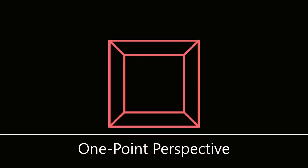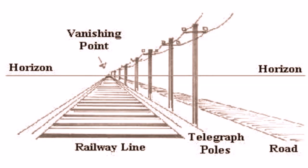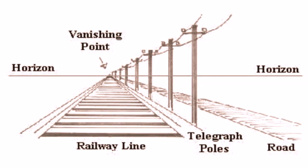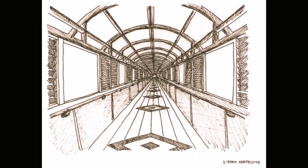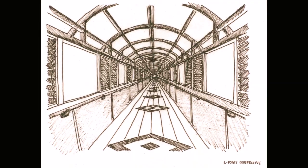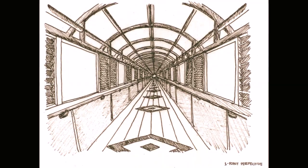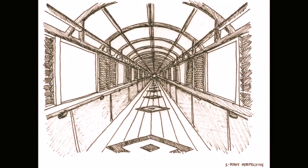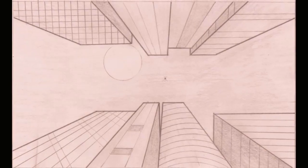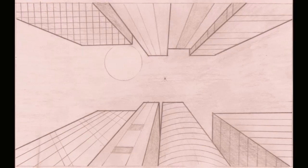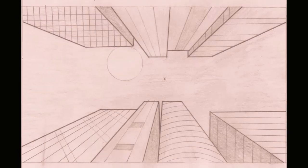One-point perspective. A drawing has one-point perspective when it contains only one vanishing point on the horizon line. This type of perspective is typically used for images of roads, railway tracks, hallways, or buildings viewed so that the front is directly facing the viewer. Any objects made up of lines either directly parallel with the viewer's line of sight or directly perpendicular, like railroad slats, can be represented with one-point perspective. These parallel lines converge at the vanishing point.